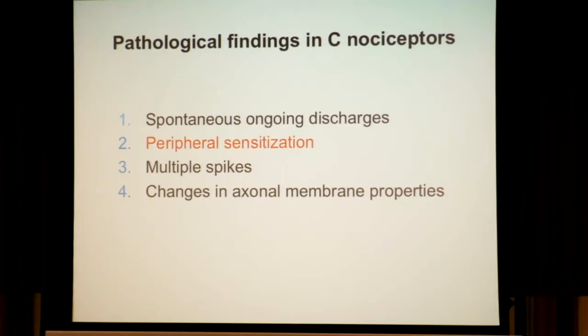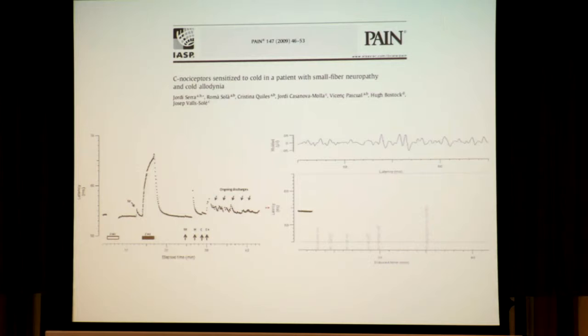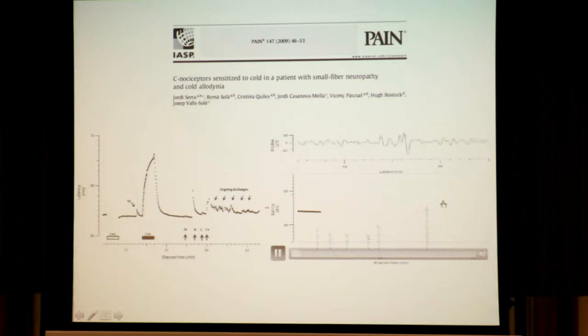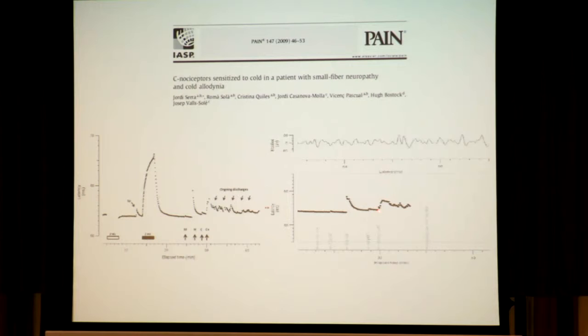In terms of peripheral sensitization, this is another abnormality. In a patient with extreme cold allodynia, after a cold stimulus you get ongoing spontaneous activity — the fiber is sensitized to cold. In this example, applying cold air triggers 30 to 40 minutes of relentless spontaneous activity. This patient has a peripheral nociceptor sensitized to cold.